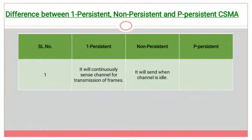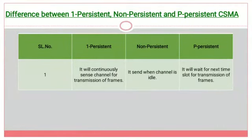In non persistent CSMA, when the channel is idle it will send the packet; otherwise it will wait for a random amount of time before sensing the channel again. In p persistent CSMA, it will wait for the next time slot for transmission of frames. Once it transmits a frame, it will not continuously transmit — it waits for a time slot, and after the timer times out, it starts transmitting the next frame.